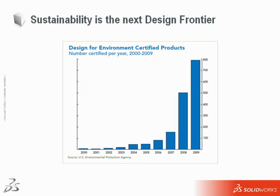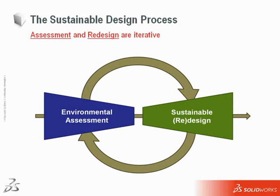As you can see from this graph showing the number of products certified according to the EPA's Design for Environment program, sustainable design is an explosive trend, growing even during the recession-slowed year of 2009. Today I'll talk about the two steps necessary for creating greener products.